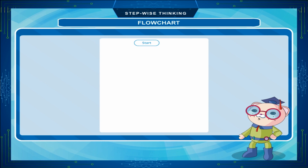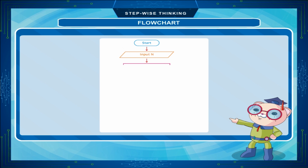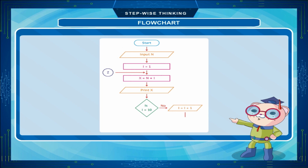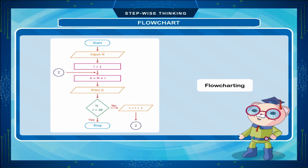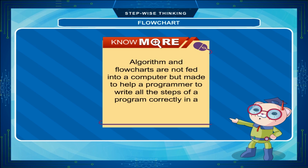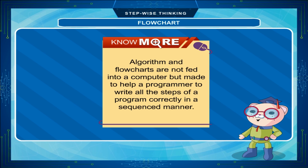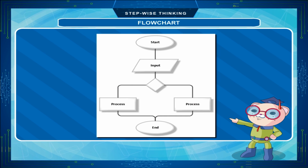A flowchart is a diagrammatical representation of steps involved in solving a problem. The steps written in algorithms can be represented diagrammatically using a flowchart. There are some special symbols which are used for drawing a flowchart. Algorithm and flowcharts are not fed into a computer but are made to help a programmer write all the steps of a program correctly in a sequenced manner.